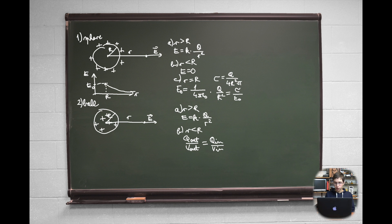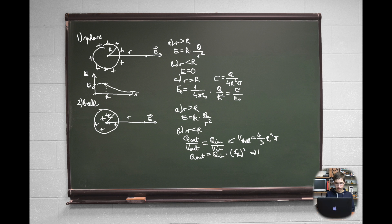Now, using the formula for volume V = (4/3)πr³, we get the expression for q_out expressed using q_in. Finally, we put this expression for charge into the formula for electric field using Gauss's law and get this formula for electric field, which equals (1/4πε₀)·(q_in/R²)·(r/R), so it is proportional to the ratio of small r over big R.